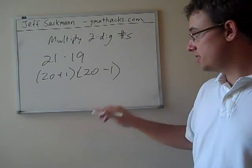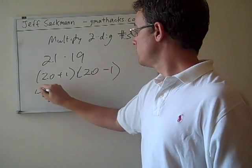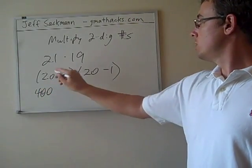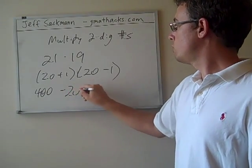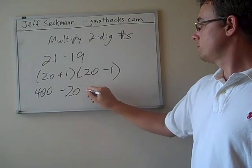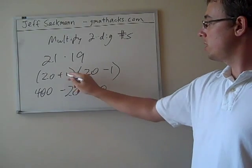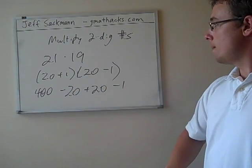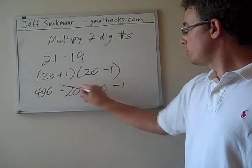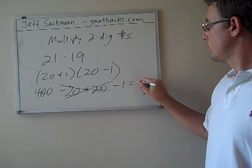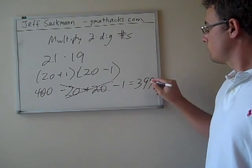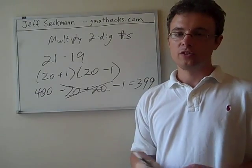Being careful with our signs, we're going to walk through the FOIL process again. 20 times 20 we know is 400, 20 times minus 1 is minus 20, 1 times 20 is 20, plus 1 times minus 1 is minus 1. Minus 20 and plus 20 cancel out, and we get to 399. That's all there is to it.